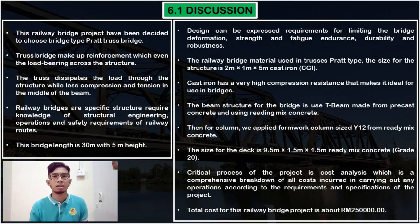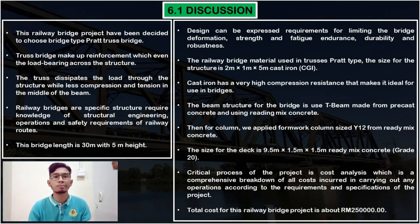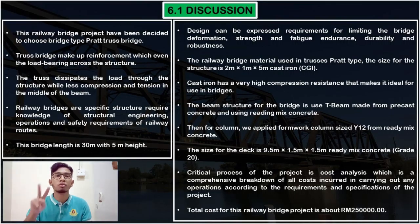Discussion. Design can be stated as one important aspect for limiting bridge deformation, strength, fatigue, endurance, and durability. We decided to choose the Pratt truss bridge type. This truss bridge forms reinforcement which evenly distributes the load across the structure. For this railway bridge, we used T-beam from precast concrete, and ready mix concrete for the column with hollow column size Y12. For the bridge deck, we use ready mix concrete grade 20. The total estimated cost for this railway bridge project is RM100,000, representing a comprehensive breakdown of all costs according to project requirements and specifications.